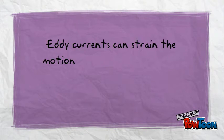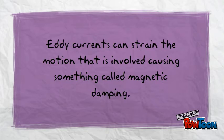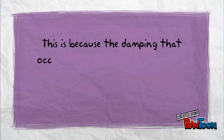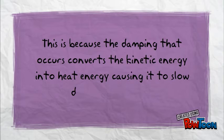Eddy currents can strain the motion that is involved, causing something called magnetic damping. This is because the damping that occurs converts the kinetic energy into heat energy, causing it to slow down and heat up.